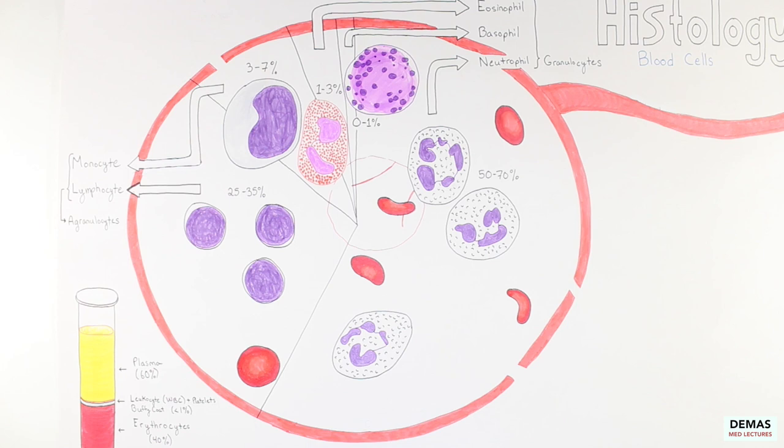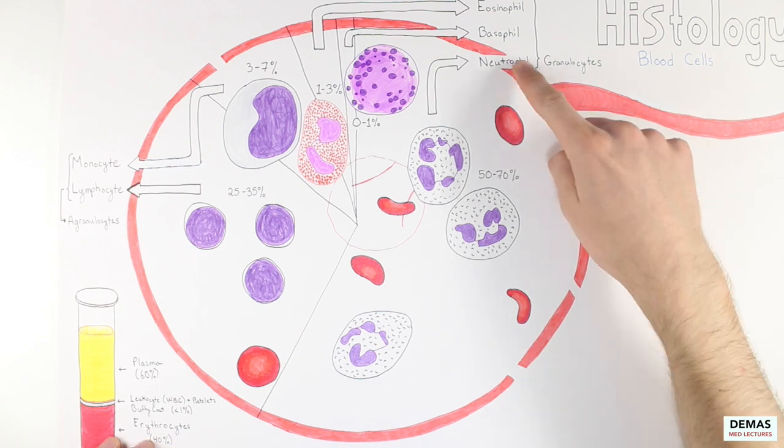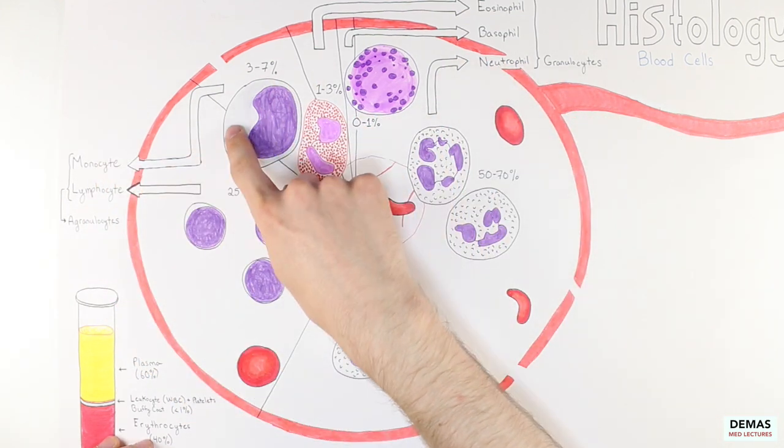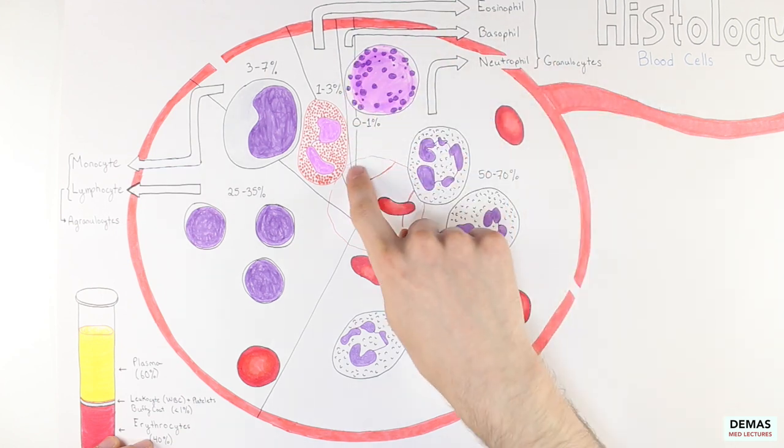A mnemonic that helped me to remember the order of prevalence of these cells was the phrase never let monkeys eat bananas for neutrophil, lymphocyte, monocyte, eosinophil, and basophil.